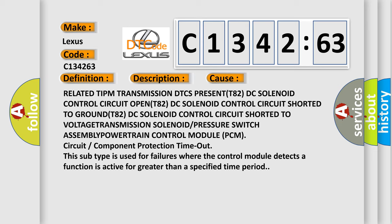Related TIPM transmission DTCs present: T82 DC solenoid control circuit open, T82 DC solenoid control circuit shorted to ground, T82 DC solenoid control circuit shorted to voltage, transmission solenoid or pressure switch assembly, powertrain